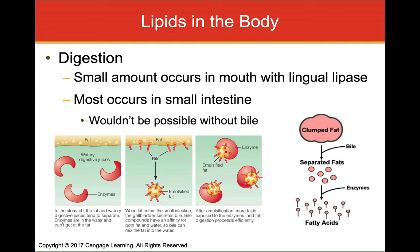In the small intestine, the fat component and the watery digestive juices containing enzymes cannot interact because fat and water don't mix. When bile arrives, it acts as an emulsifier — much like lecithin in mayonnaise — dispersing the fat within the digestive juices. Once those fat globules are dispersed, the enzymes can attack the fat and break it down into individual fatty acids for absorption. Large clumps become smaller clumps, then enzymes break them into free fatty acids, glycerol, and monoglycerides.